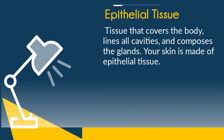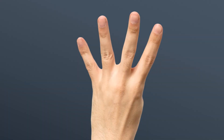Next, epithelial tissue. The tissue that covers the body, lines all cavities, and composes the glands. Your skin is made up of epithelial tissue. And here's some epithelial tissue.